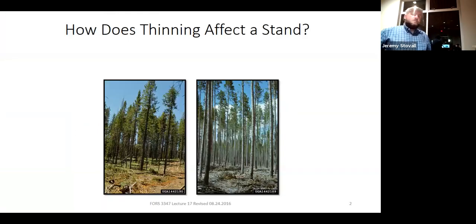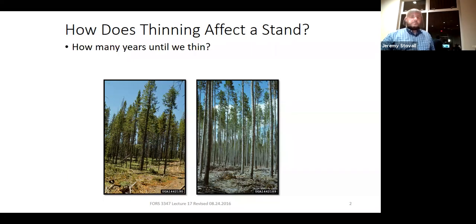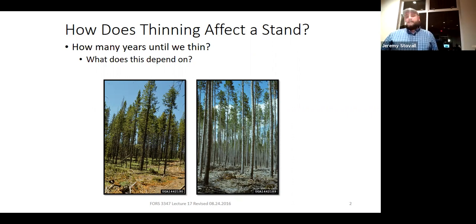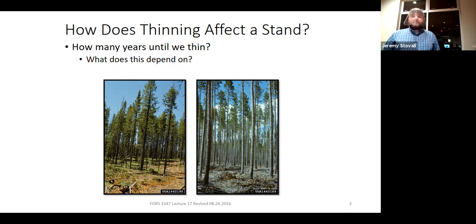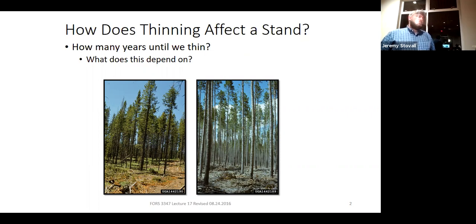When we look at density management, we have to think about how thinning is going to impact the stand. One big question is how many years do we wait until we thin? Here are a couple of photos of ponderosa pine stands. The stand on the right has a basal area of about 90 square feet per acre, is 115 years old, and has been managed without much thinning. The stand on the left is a much younger stand at a similar basal area — they got there quicker by thinning throughout the rotation. Thinning is really going to impact, especially in an even-aged pure forest, how quickly your stand moves through the stem exclusion phase of stand dynamics.